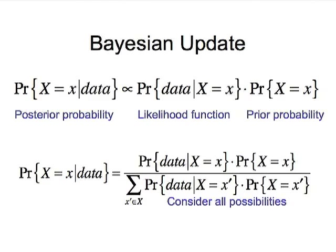In order to turn that proportionality into an actual number — into a probability distribution where those probabilities all add up to one — it's necessary to consider all possibilities and have a normalizing constant in the denominator. That normalizing constant is nothing more than all the possible numerators added up, which guarantees that considering everything will sum to one in probability.